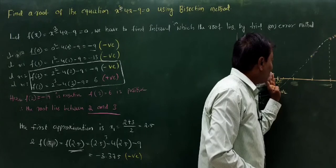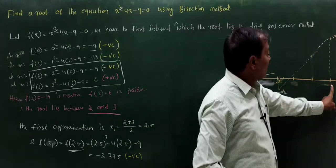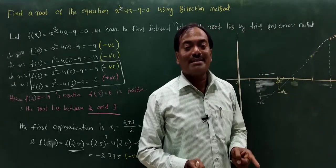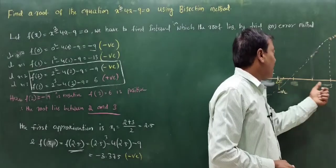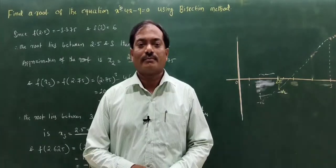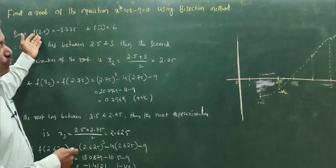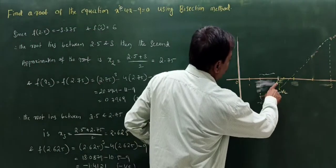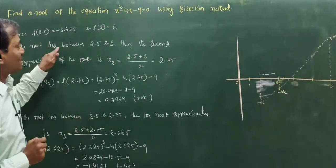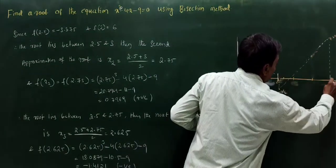We now consider the interval [2.5, 3]: f(2.5) is negative and f(3) is positive, so the root lies between 2.5 and 3. We proceed to find the next approximation.